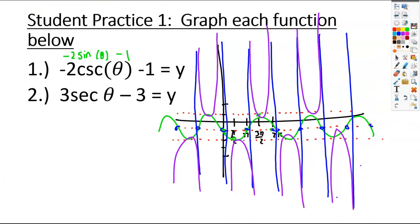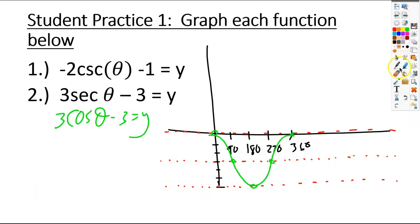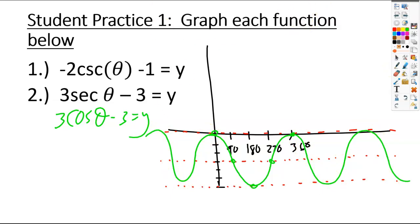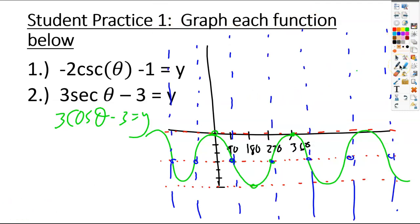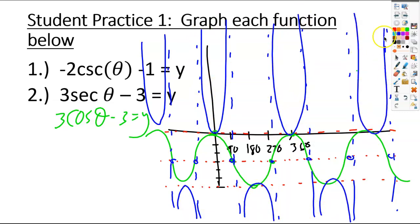For number 2, the maximum is right on the x-axis, the midline is at negative 3, and the minimum is at negative 6. Next, graph the corresponding reciprocal function of secant, which is cosine — starting at the top, going down in the basic cosine shape, and continuing the pattern. Then put in your vertical asymptotes, and finally sketch in your secant curves. And that's it.